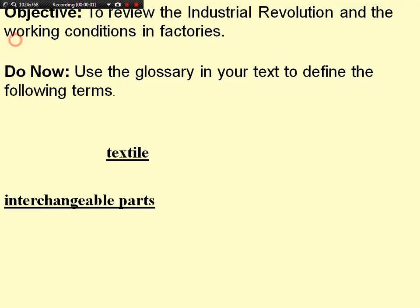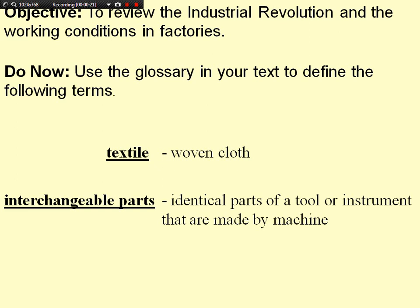We're going to take a look at industrialization and review the industrial revolution and working conditions in factories at the time. A textile is a woven cloth, usually made for clothing. Interchangeable parts are identical parts of a tool or instrument that are made by a machine, and they make production of goods a lot faster and more efficient.